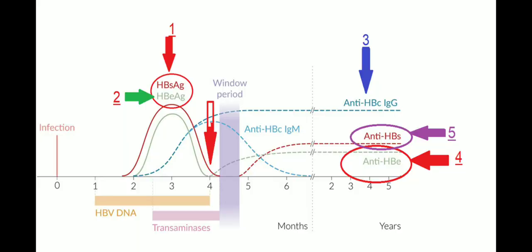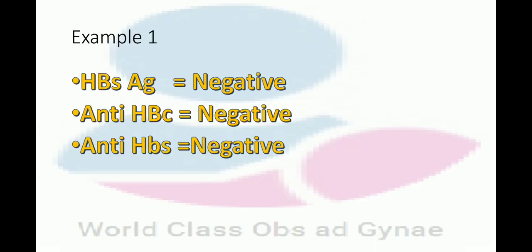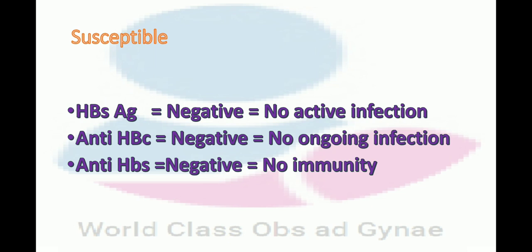Let us revise this figure. Number one is HBs antigen, number two is HBe antigen, after that anti-HBc immunoglobulin, then anti-HBe, and in the end anti-HBs. Example number one: HBs antigen is negative, anti-HBc is negative, anti-HBs is negative. This indicates that the patient is susceptible — because HBs antigen negative means no active infection, anti-HBc negative means no ongoing infection, and anti-HBs negative means no immunity.